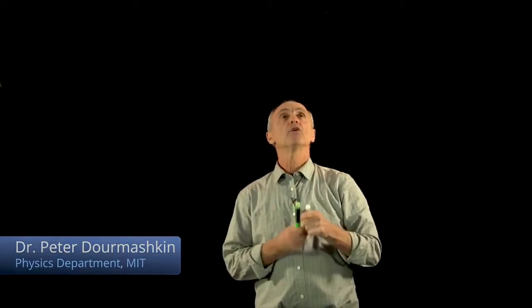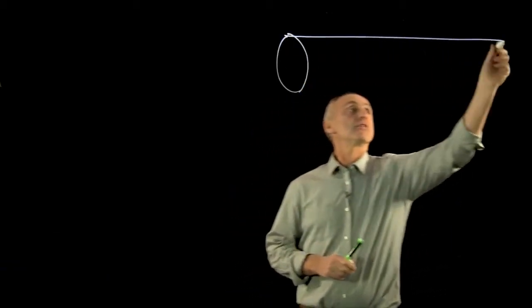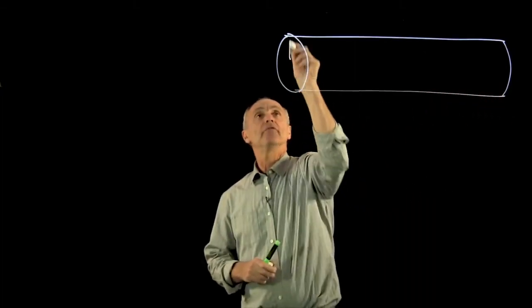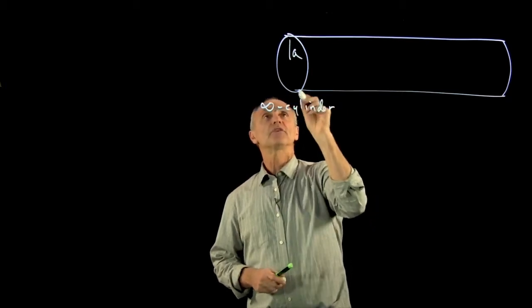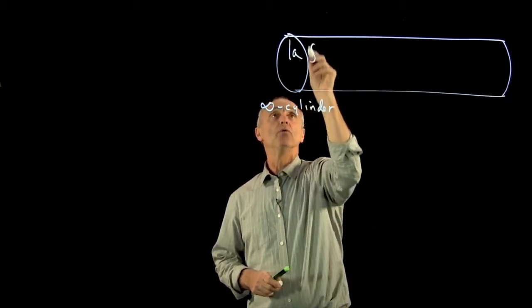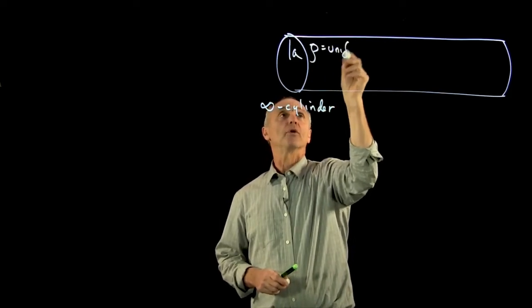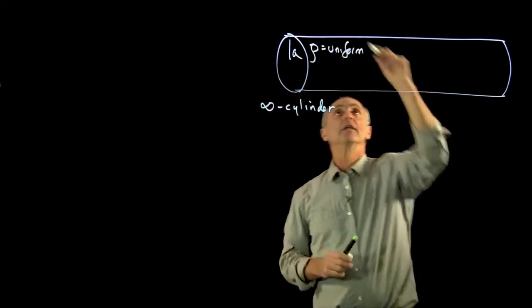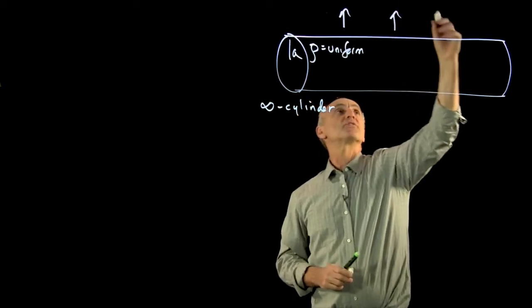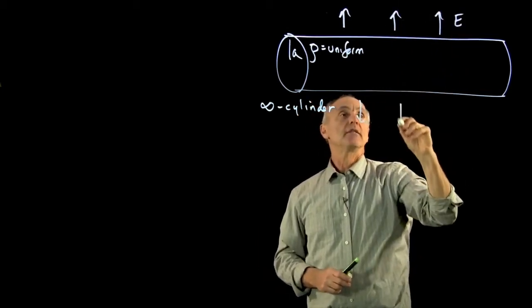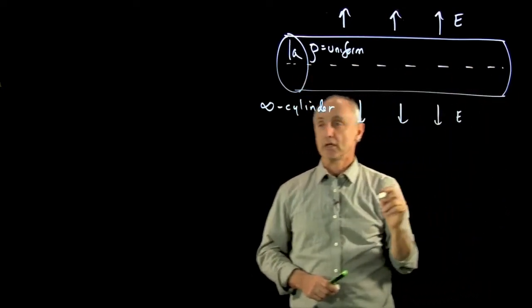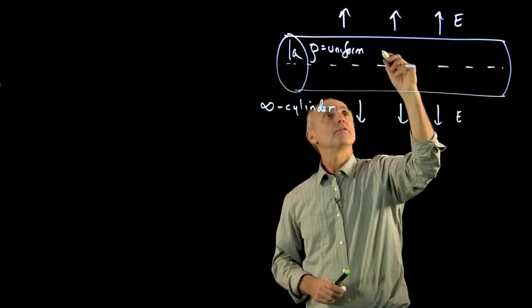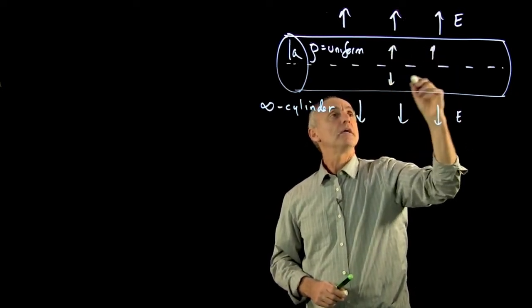We would now like to consider another example of cylindrical geometry. Let's consider a solid cylinder of radius a — an infinite cylinder with a uniform charge density rho. We make the cylinder infinite so we can use the same symmetry argument to say that the electric field points away from the axis of symmetry. But unlike the wire, there is now going to be some field inside.